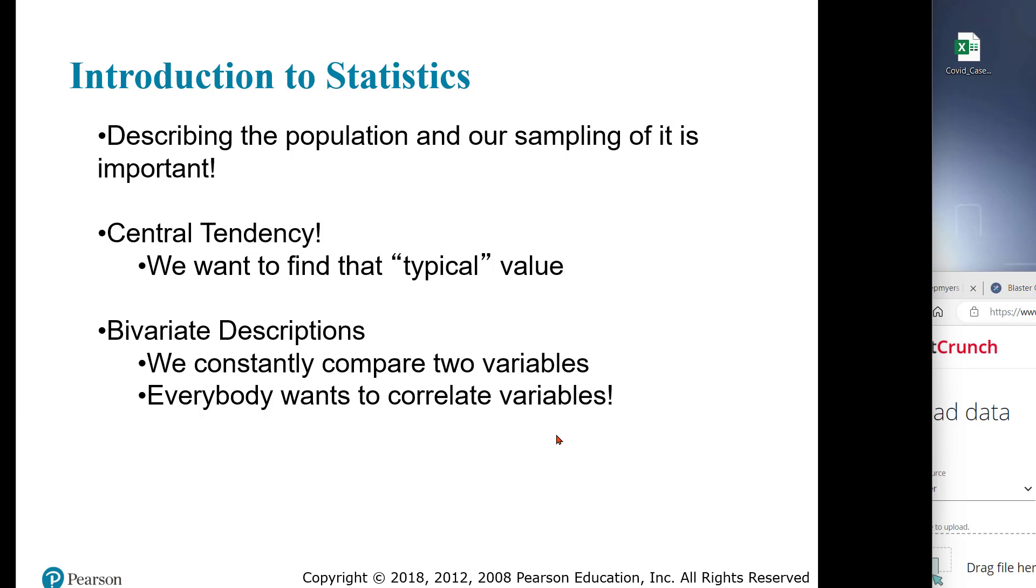In this course, we will focus almost exclusively on bivariate data. That is, we will examine and compare two variables. In nursing and the other health-related fields, we want to find that typical value to see where our patients are in terms of their health. We also want to correlate one variable to another, such as when we assign dosage for a drug intervention. To do this, we need to understand our patients' data. We need a basic understanding of statistics.